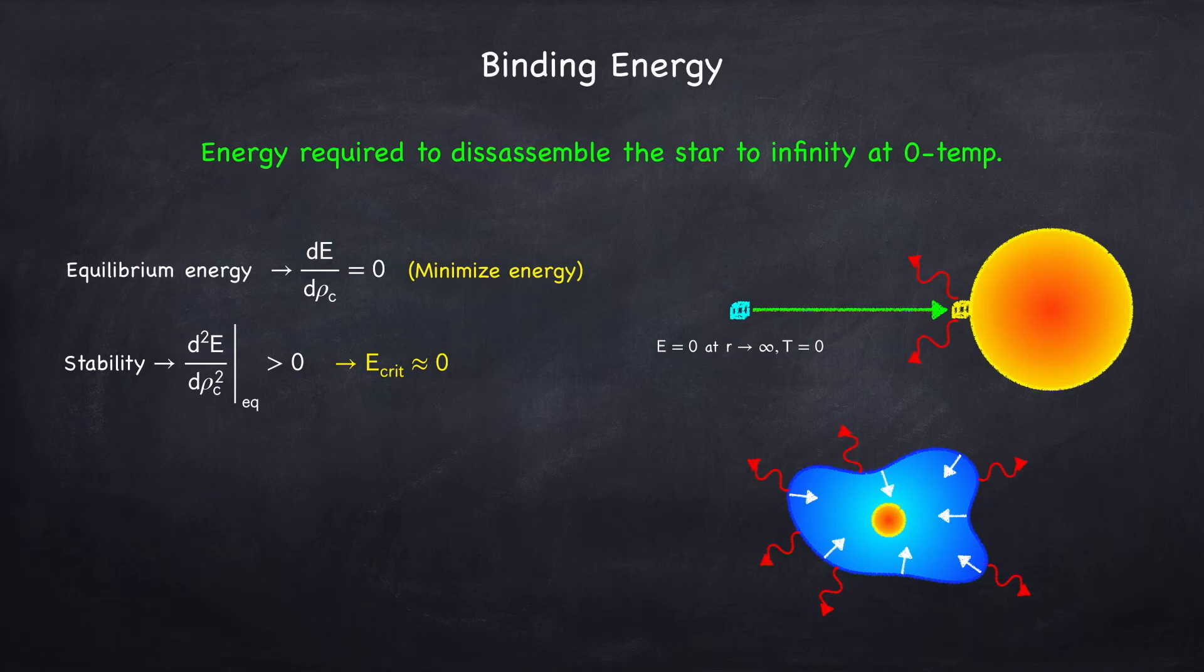We found that the critical energy, which is when the star goes unstable, was very close to zero. And this happens when the star is radiation dominated, meaning that the pressure supporting the star against gravity is radiation pressure.